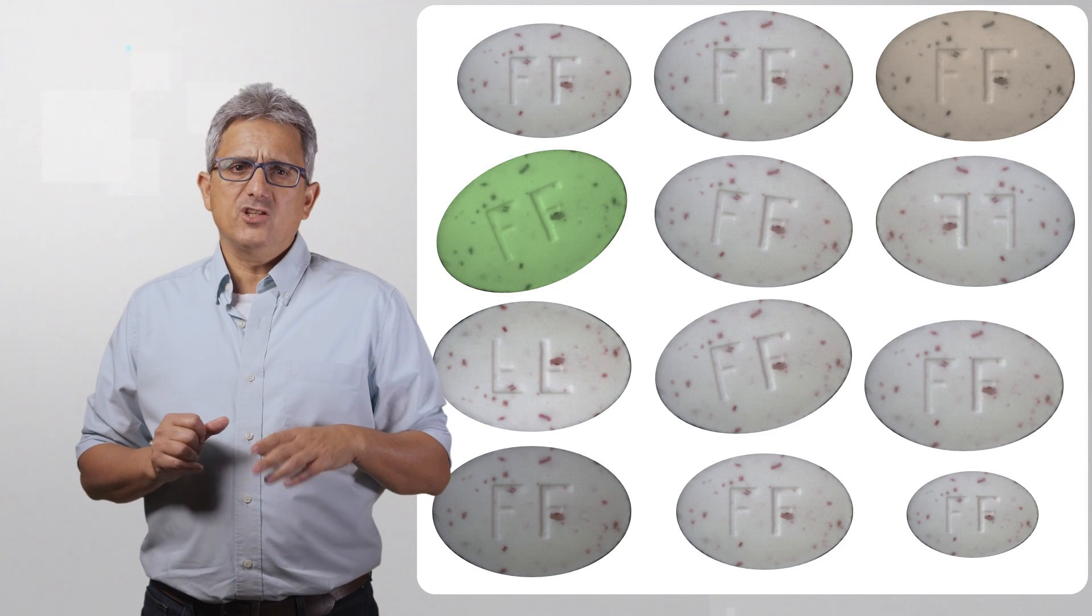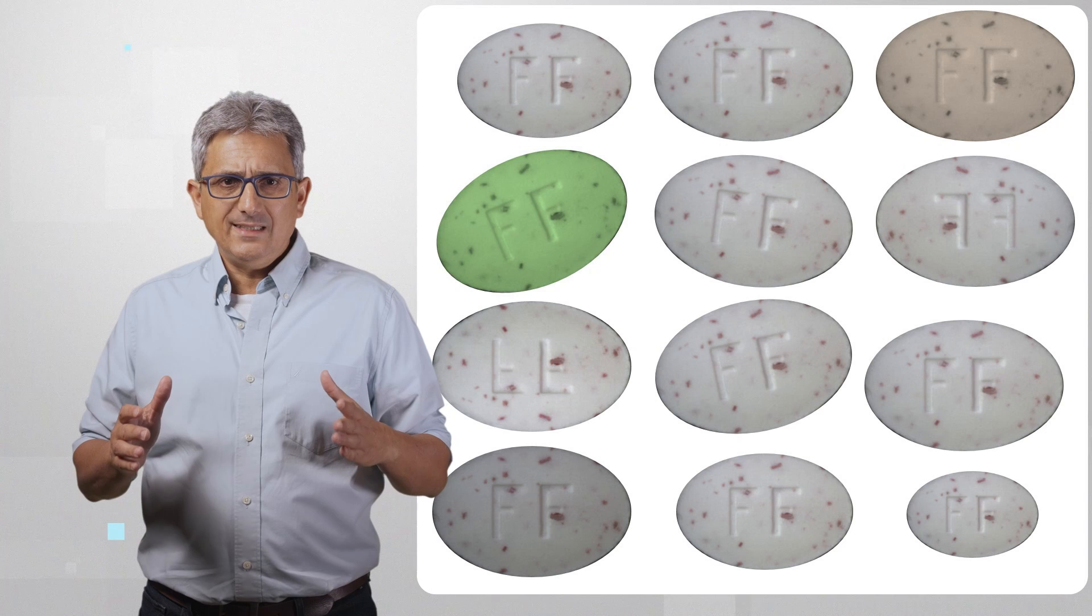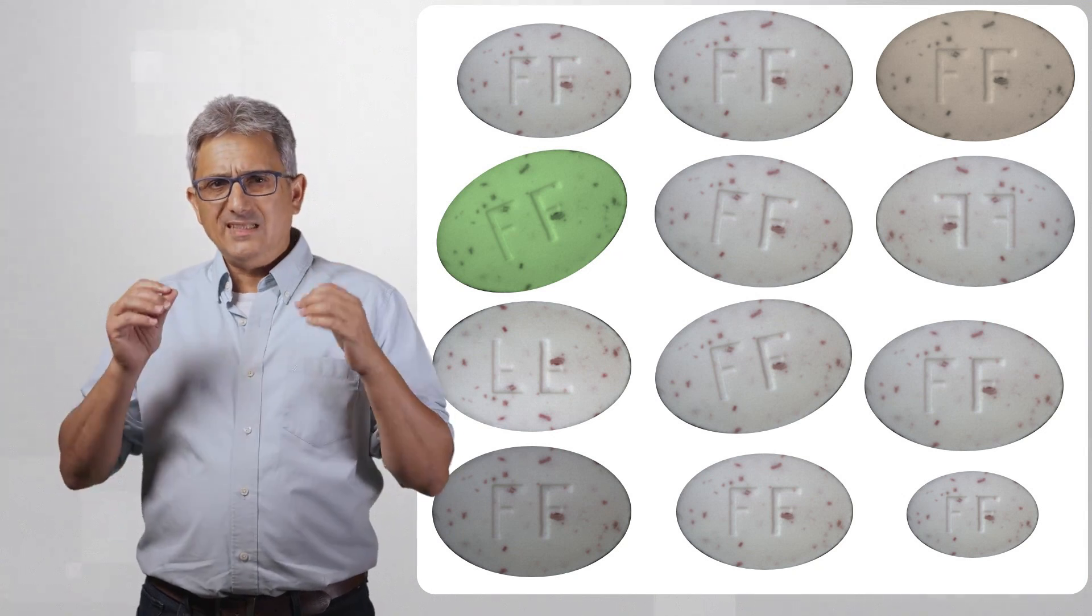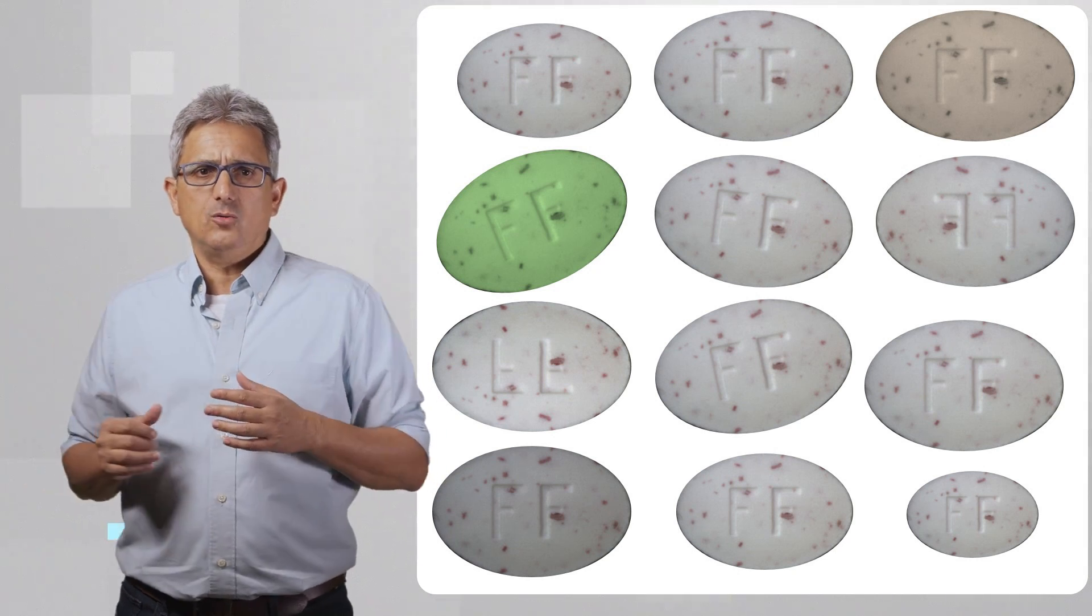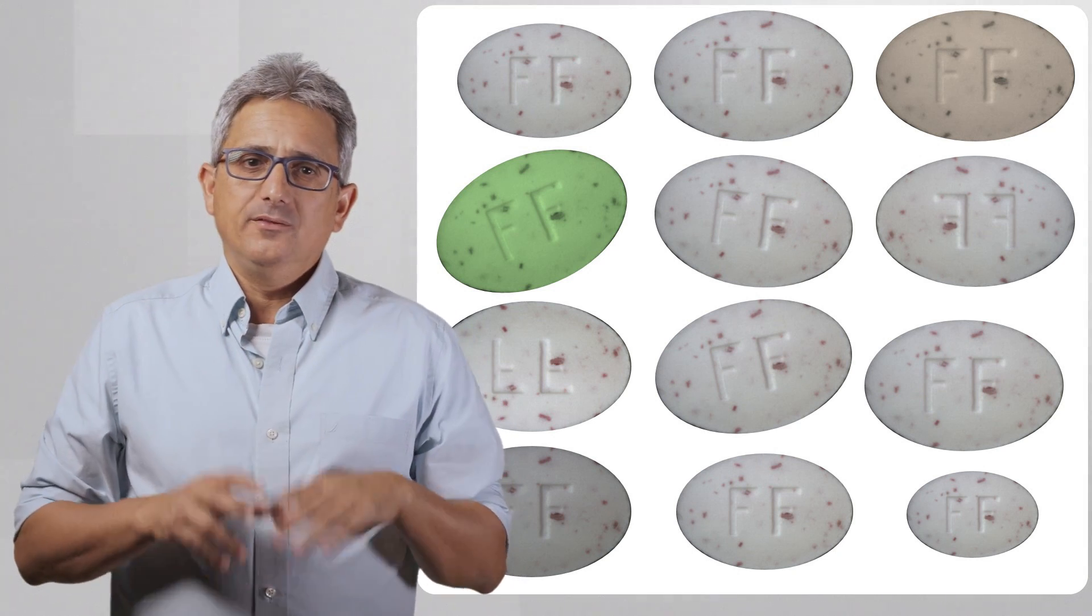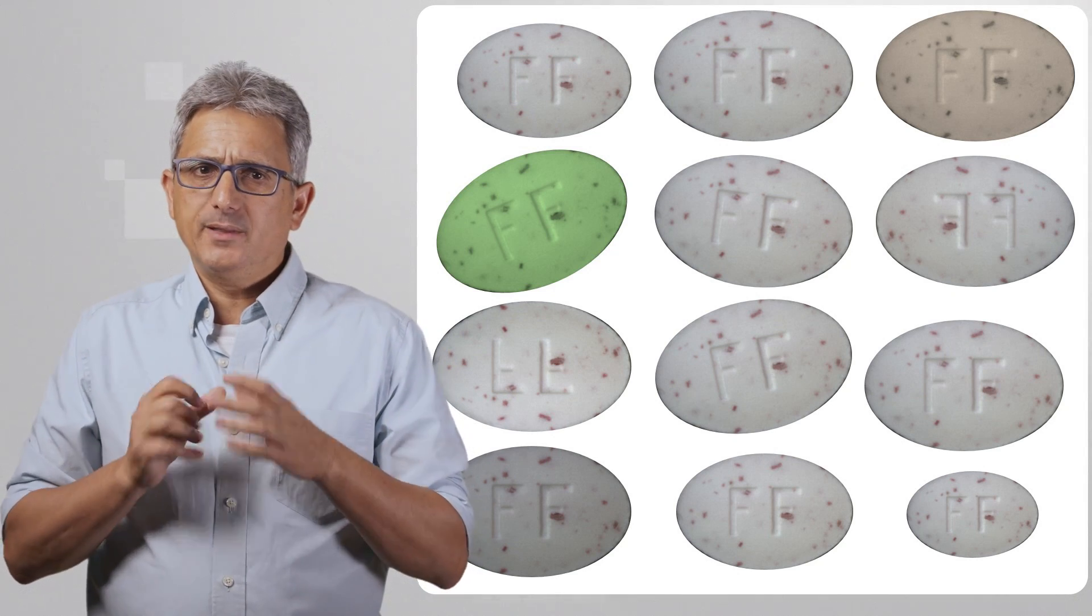For a computer, if you change one pixel, it's a totally different image. What we need is a system that is invariant to these image manipulations, like rotation, shifting, and so on. And this is exactly what our deep learning model is doing. It sounds like magic, so let me explain it in a minute.